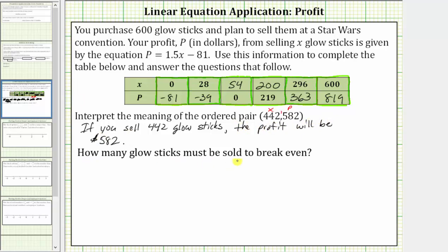Next: how many glow sticks must be sold to break even? Break even means there's no loss and no profit, or the profit is equal to zero. Going back to the table, we already found the break-even point. The column where P equals zero represents the break-even point, which is the ordered pair (54, 0). This means to break even, you must sell 54 glow sticks.